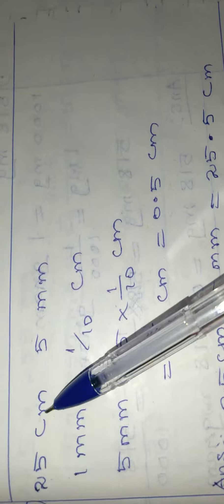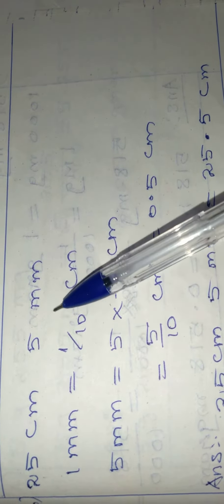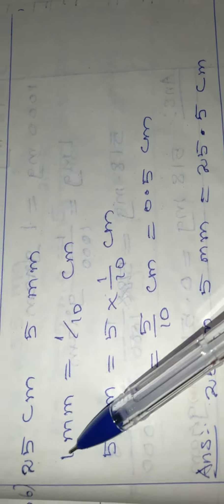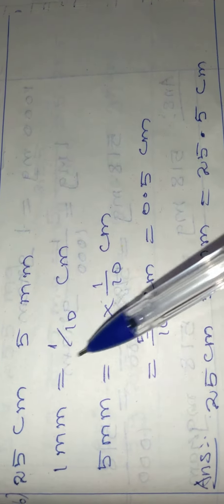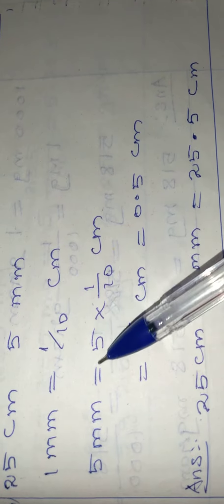25 centimeter we can write as it is. How to write this 5 millimeter into centimeter? 1 millimeter is equal to 1 by 10 centimeter. So 5 millimeter is equal to 5 into 1 by 10 centimeter.